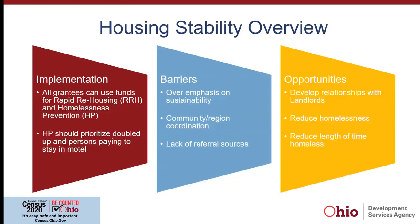There are a couple of general things to think about regarding implementation. We want people to serve the hardest to serve — for instance, with homelessness prevention, it should be people who are doubled up, people most likely to be homeless. We want to prevent people from becoming homeless or move people to permanent housing, so we don't want to have an overemphasis on sustainability. With our help, most people are successful. You also want to be coordinating with other agencies in your community to have appropriate referral services.